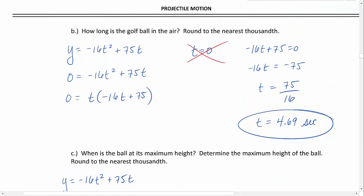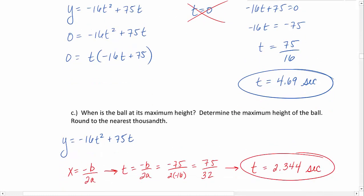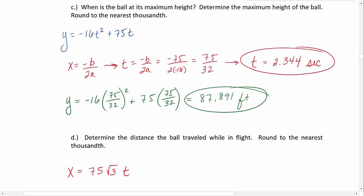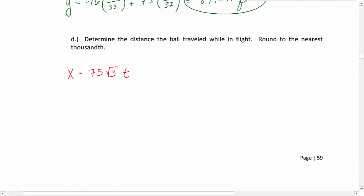We found that in part B. How long is the golf ball in the air? So what we're going to do is plug that value in for t. We get x to be equal to 75 square root of 3 times 4.69. Plugging this into our calculator, we get 609.249 feet.